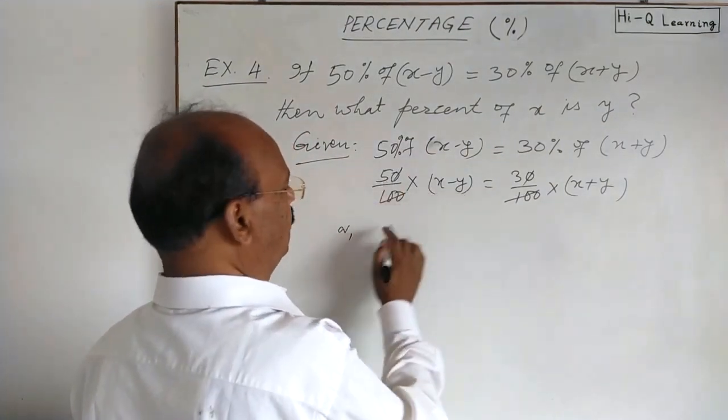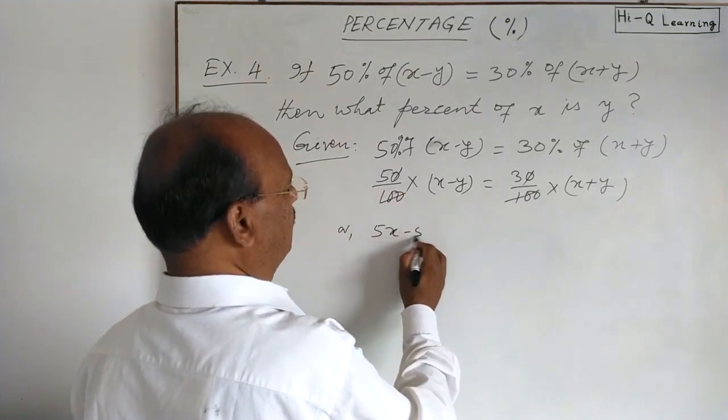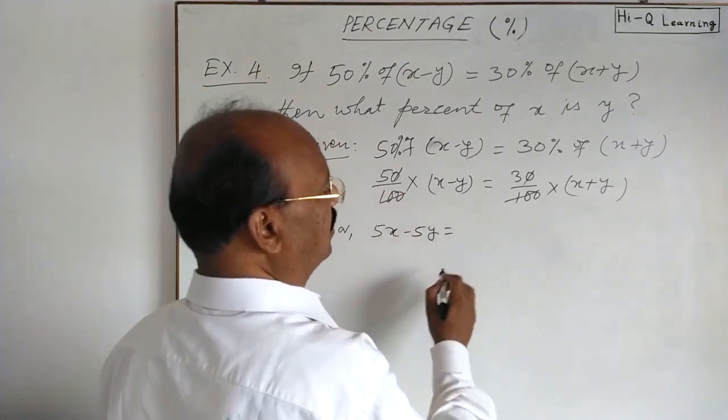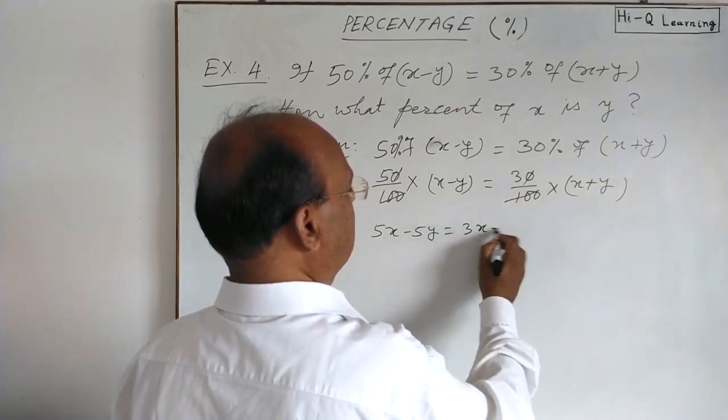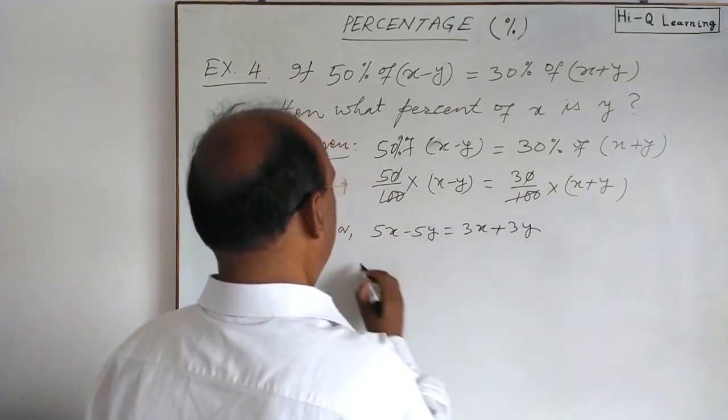5 into x minus y means 5x minus 5y in right hand side. 3x plus 3y.